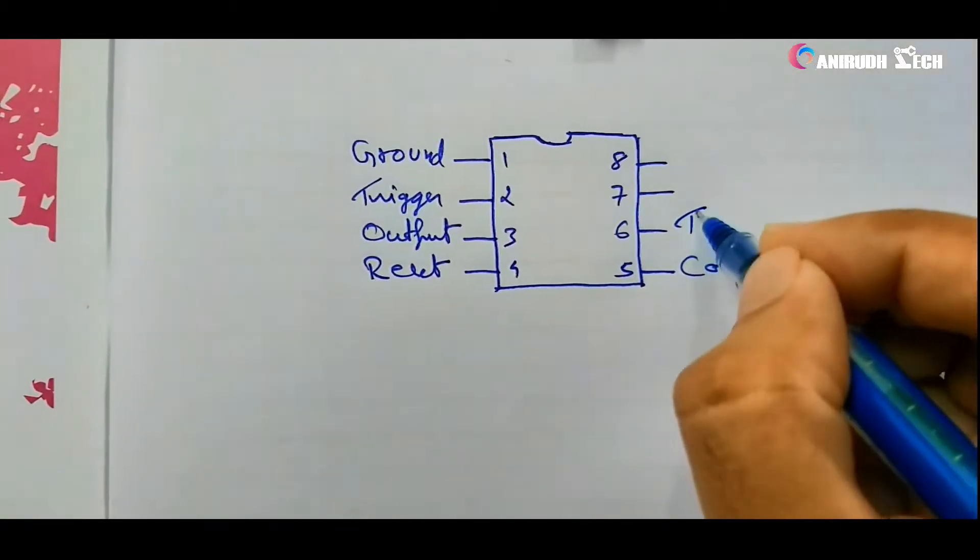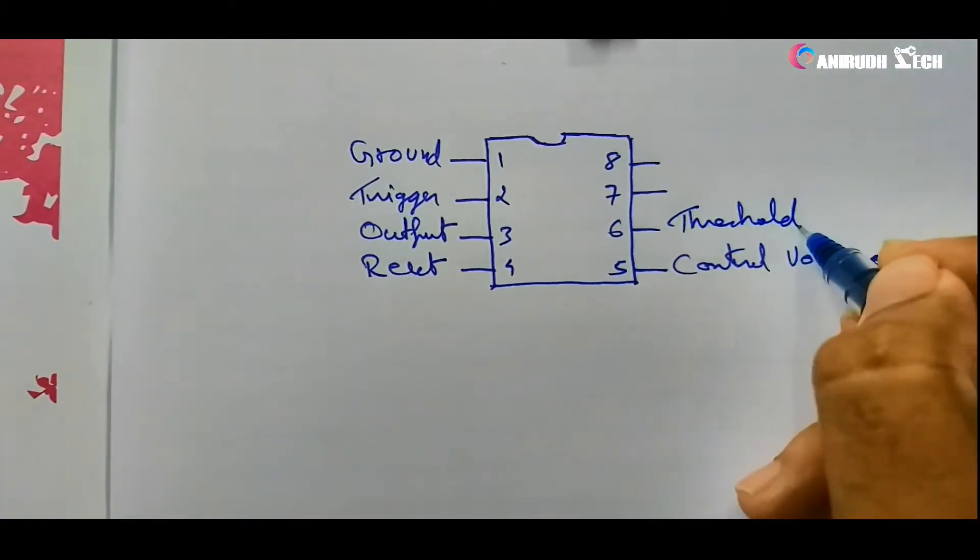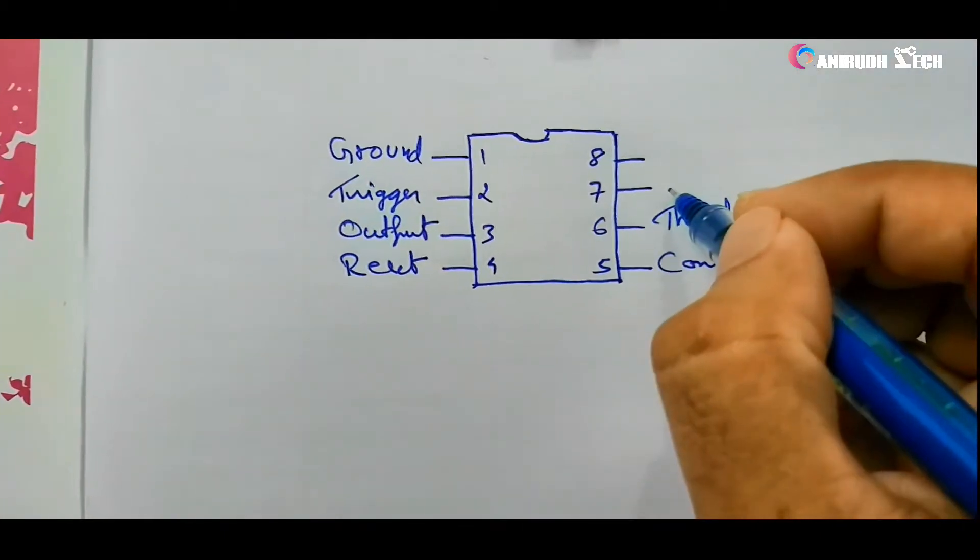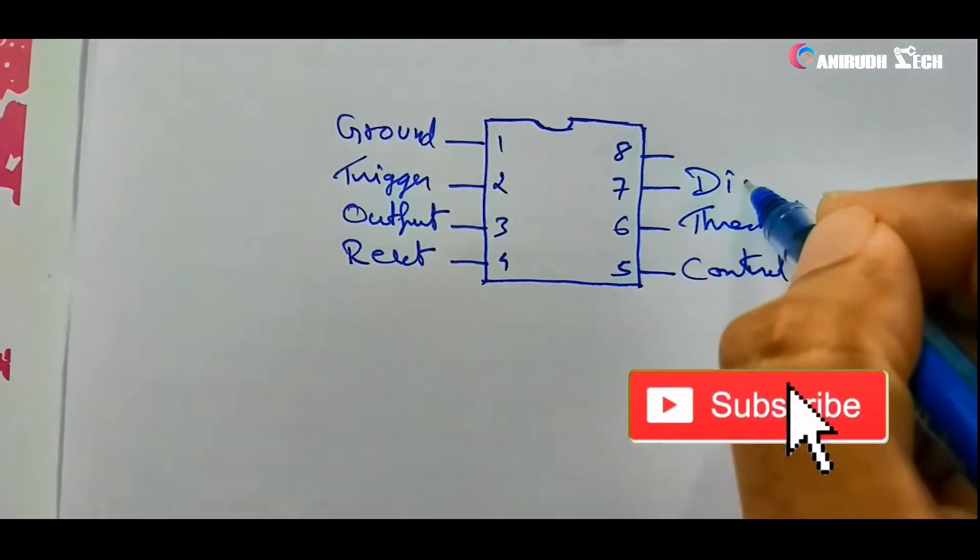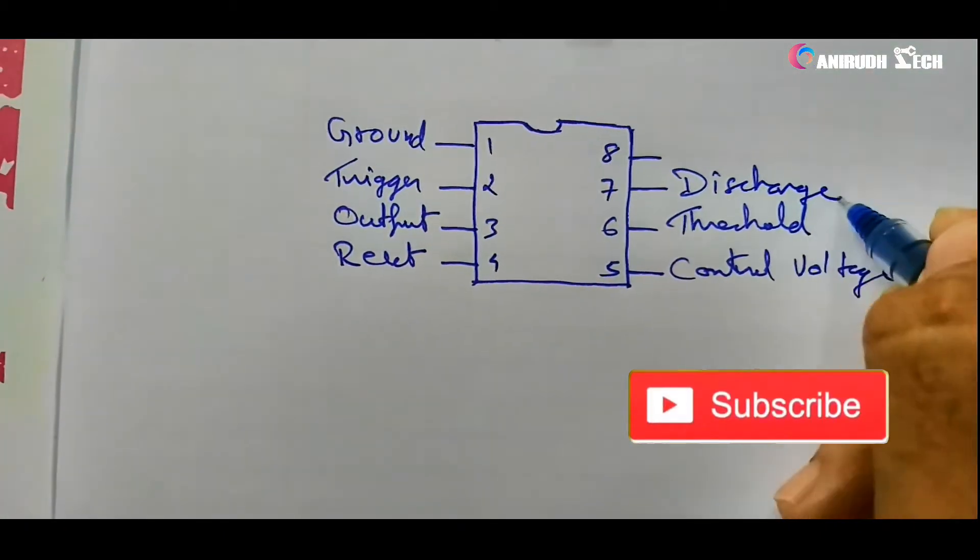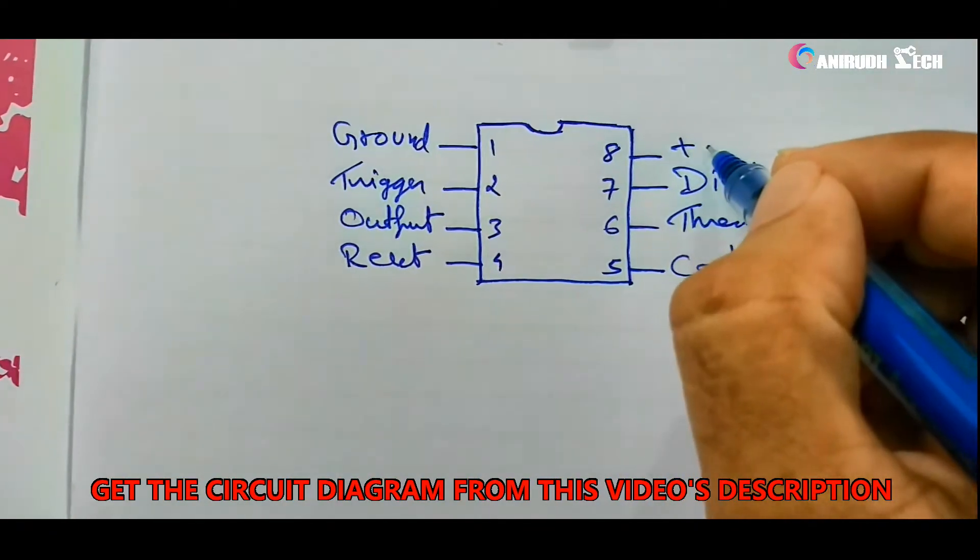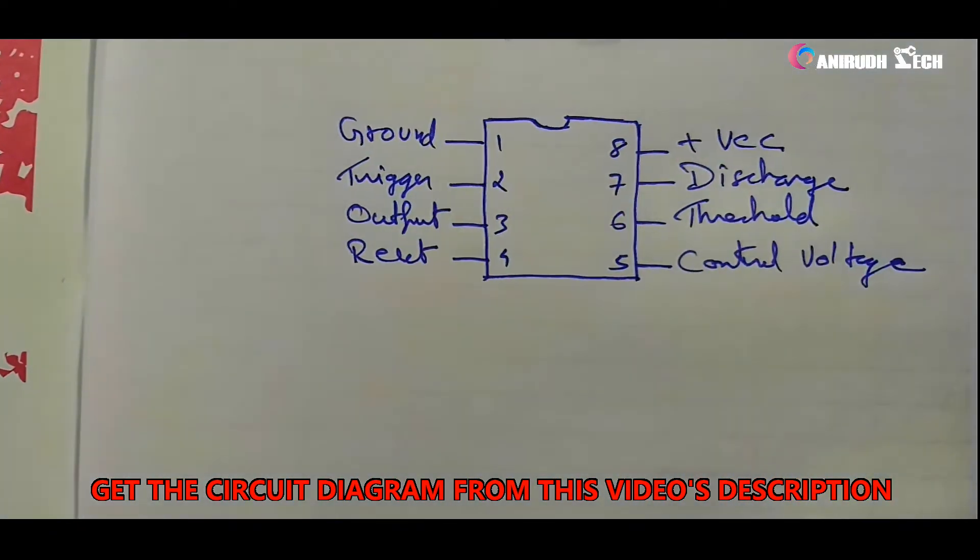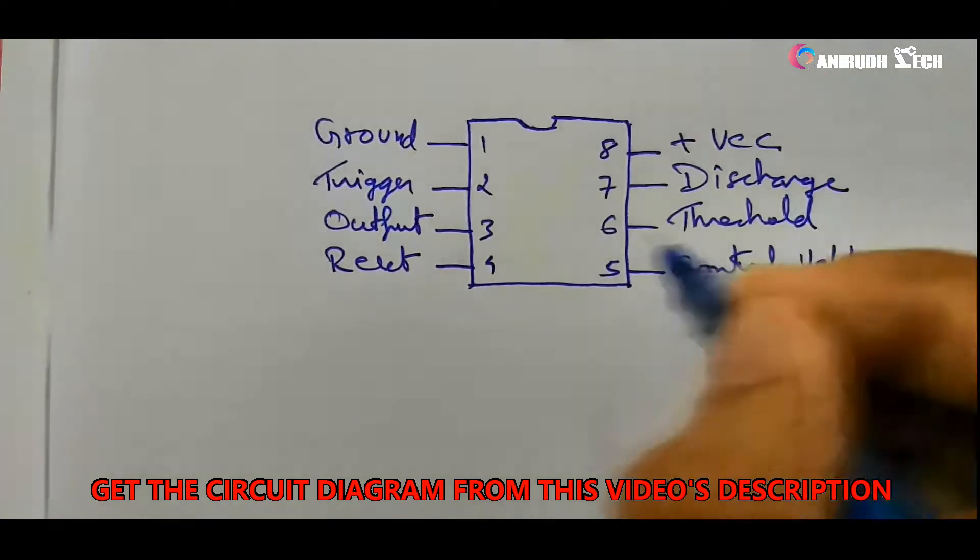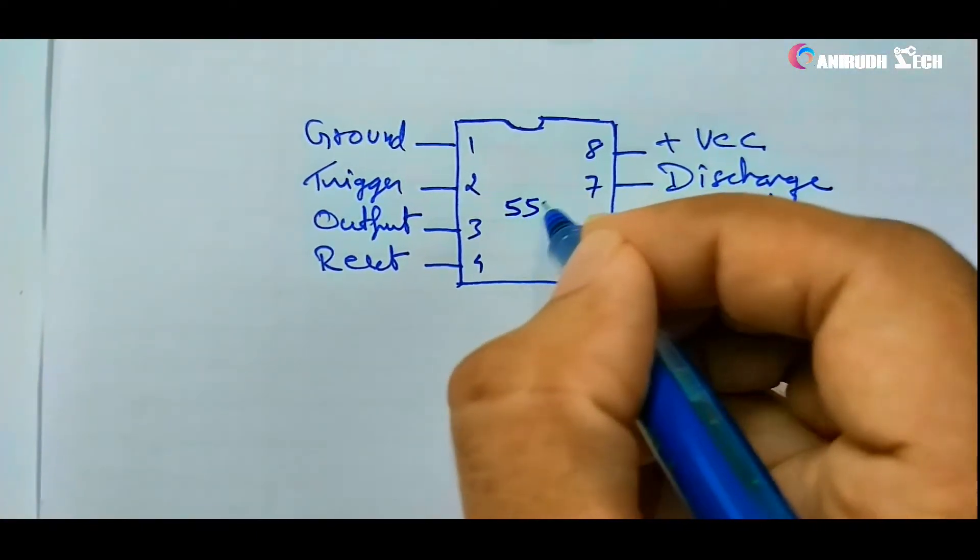Sixth one is threshold, and seventh one is discharge, and eighth one is VCC. This is our 555 IC pins.